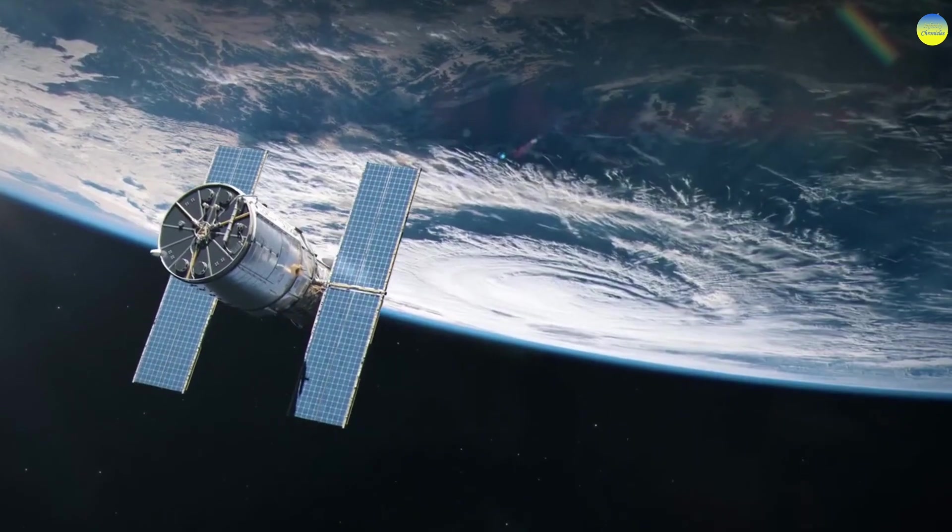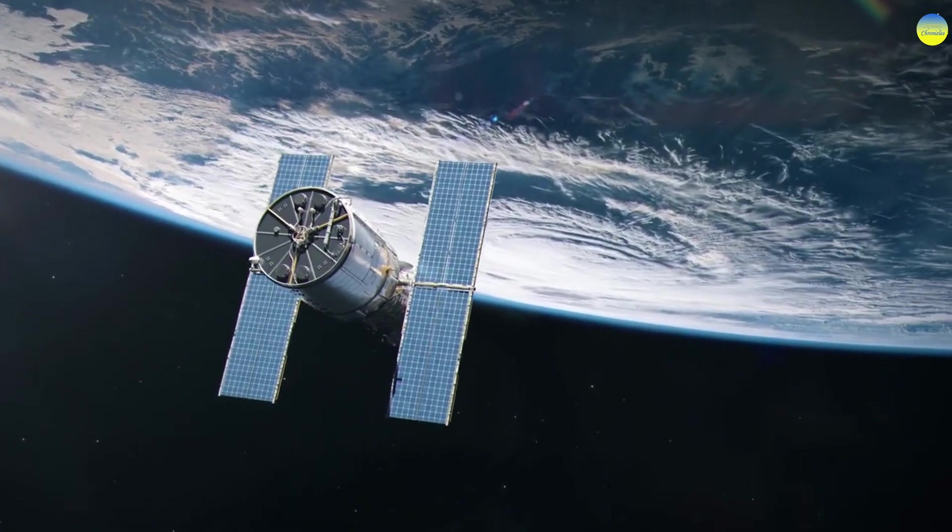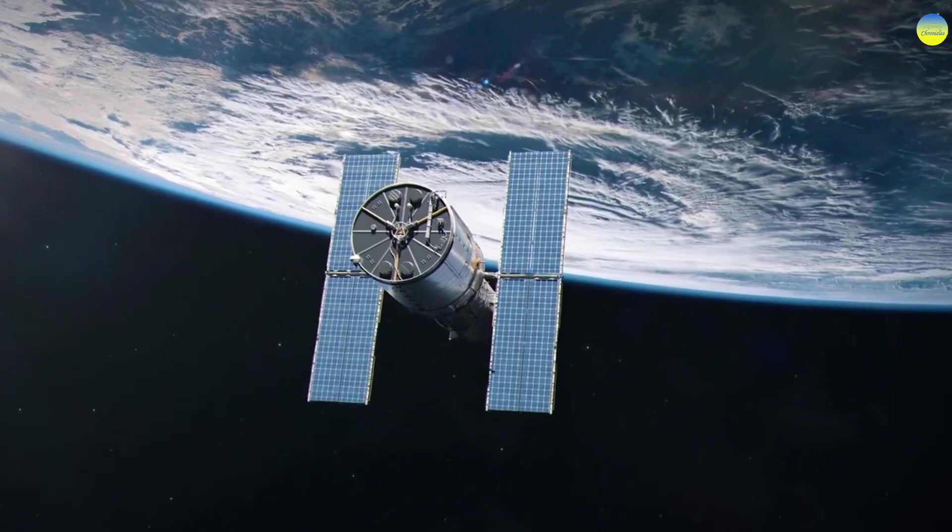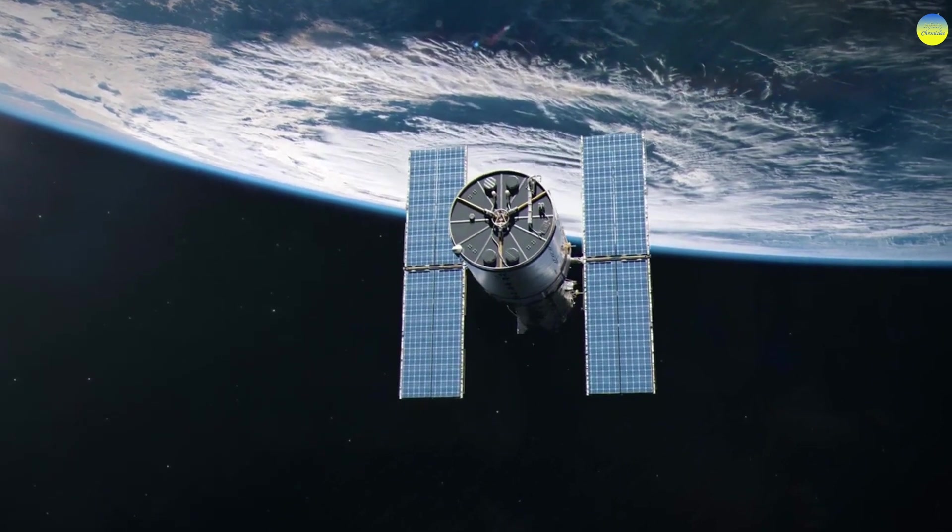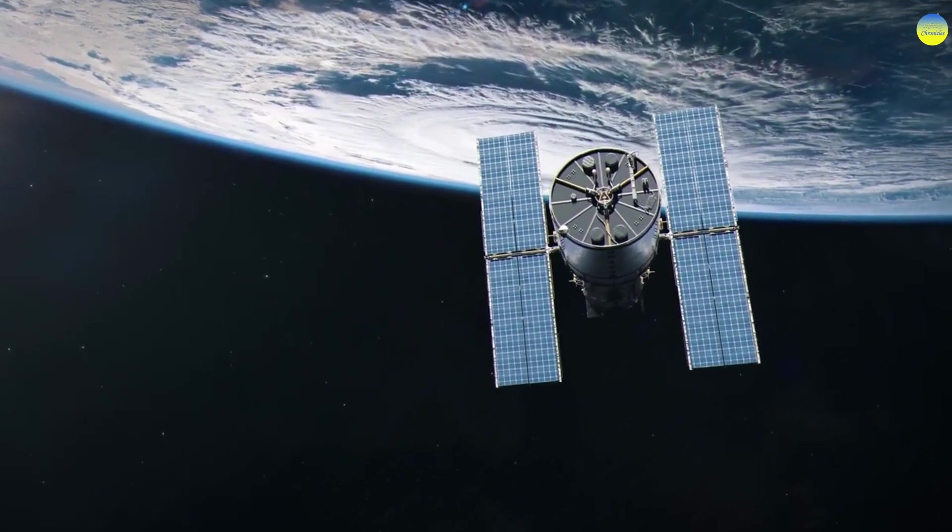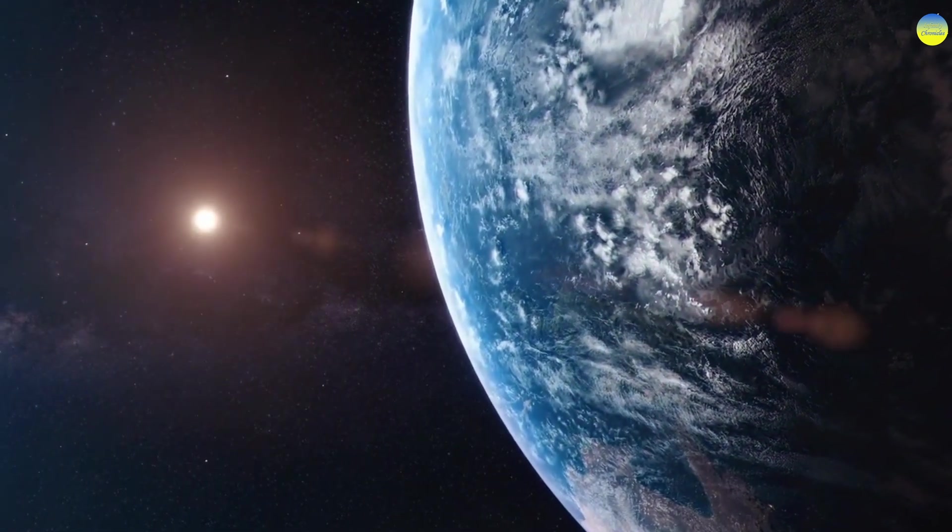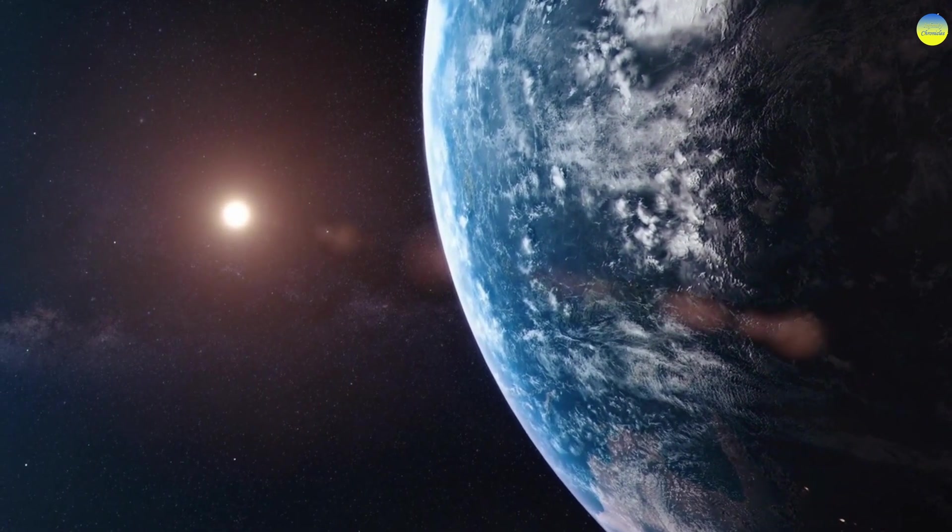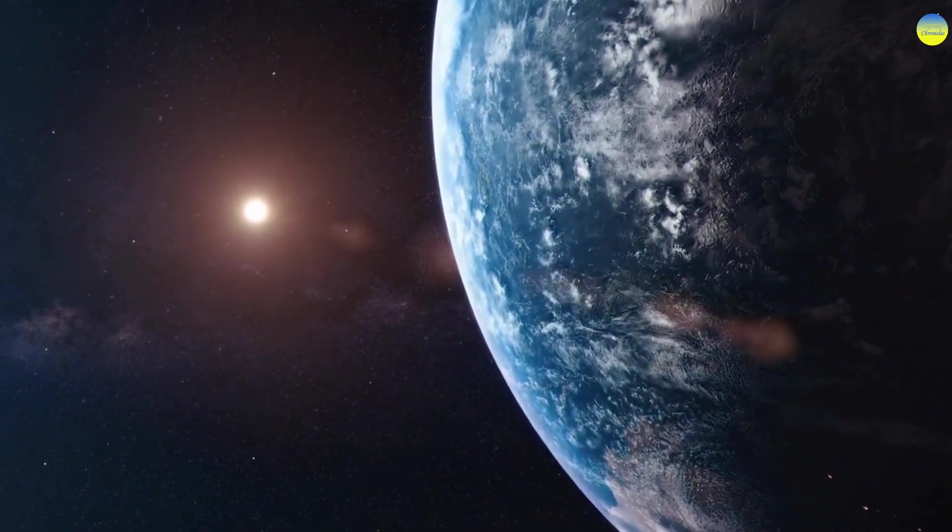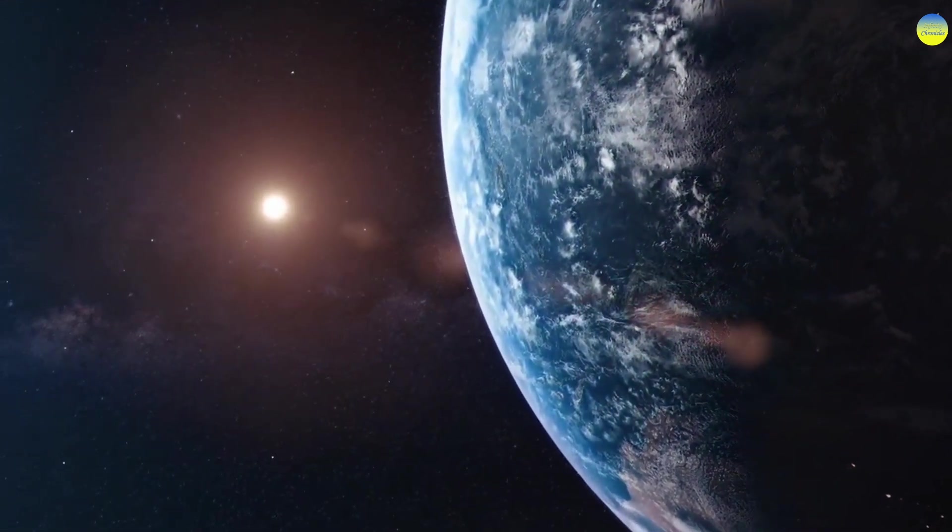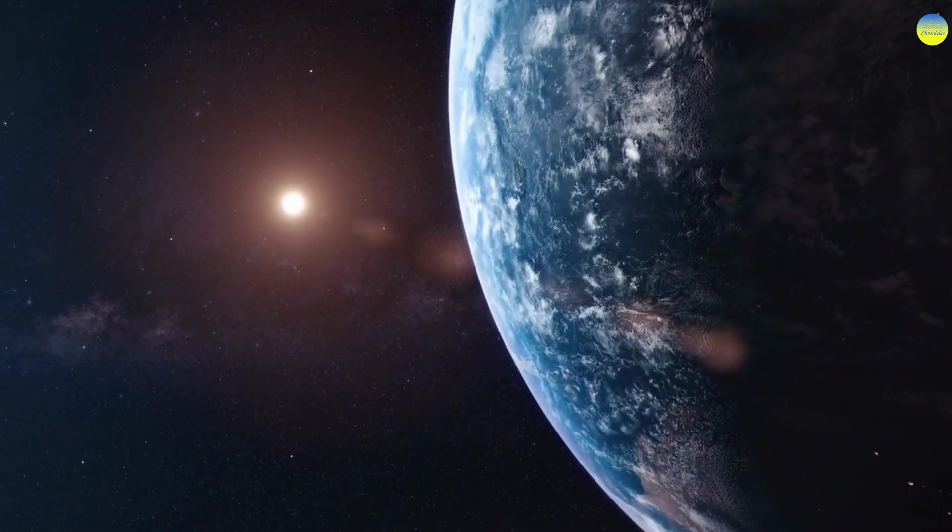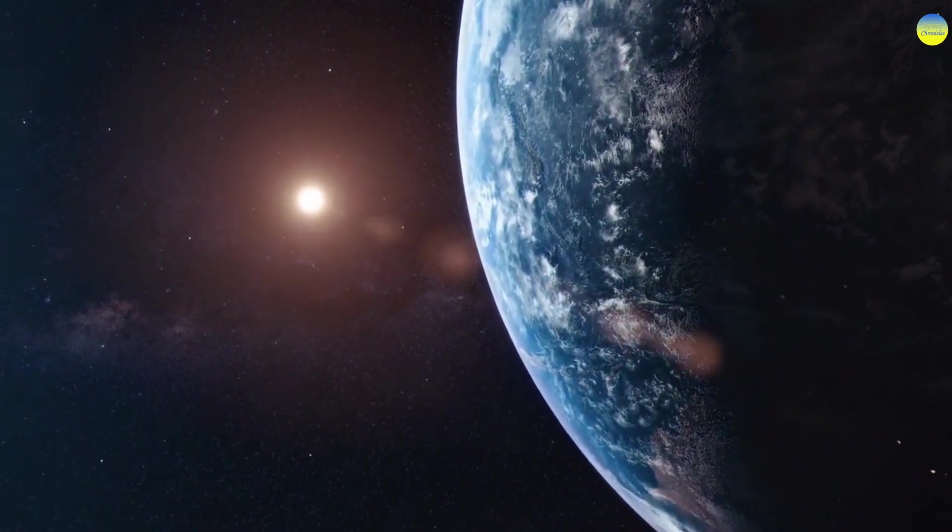Modern knowledge of astronomy and laws of planetary motion indicates that the probability of the existence of such a planet is minimal. First, the presence of a planet the size of the Earth in the same orbit as Earth, but on the opposite side of the sun, would cause noticeable gravitational effects on the movement of other planets in the solar system, including Earth.